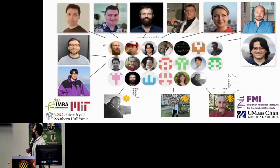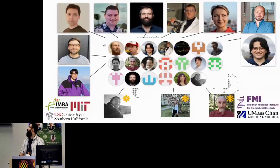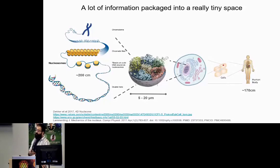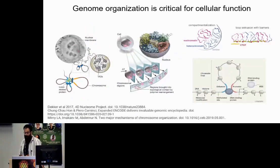There are additional contributors that I wasn't able to fit in the slide. The main biological question supported by Open2C is understanding the impact of nuclear organization on cellular function and homeostasis. Genome organization is very critical for many cellular functions and homeostasis, and these processes are dynamic processes within the cell, best interrogated using omics methods.